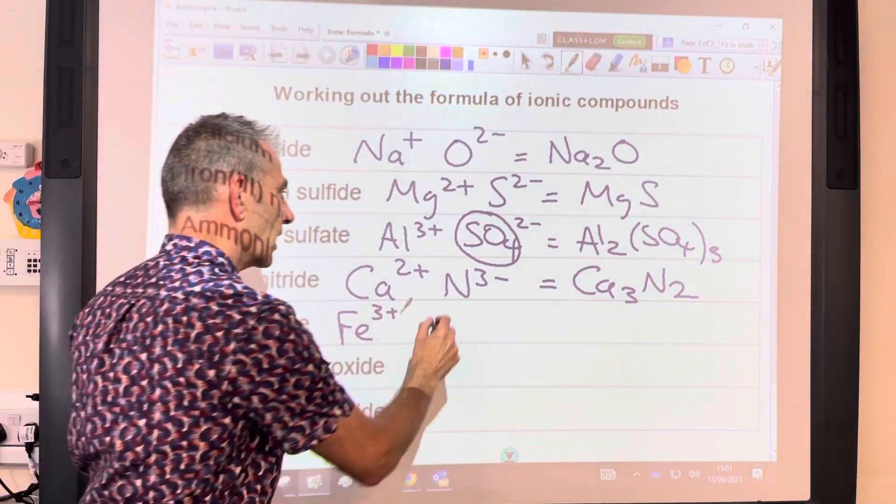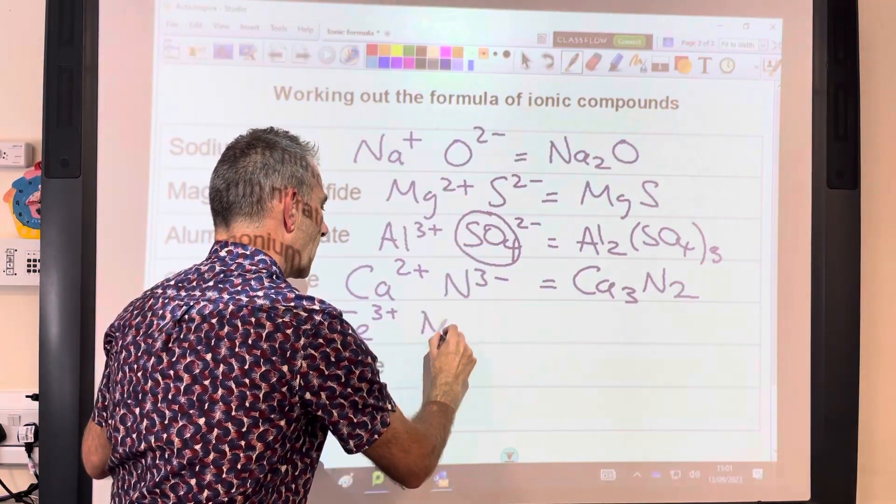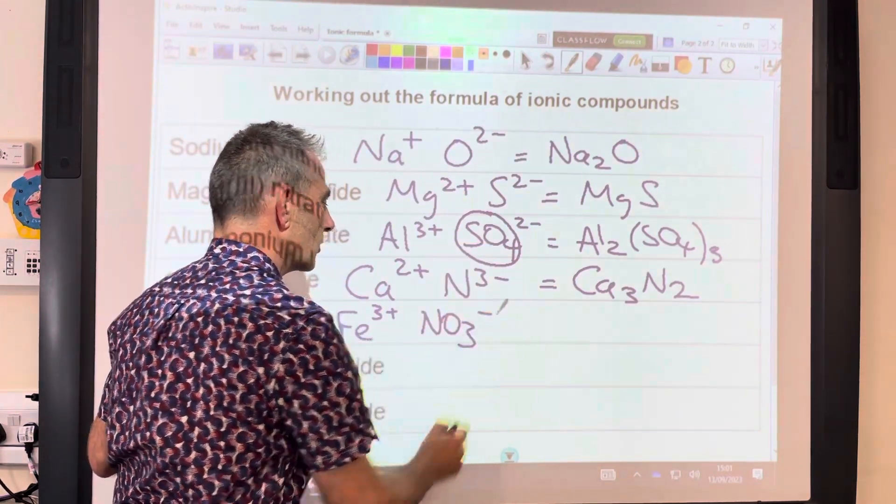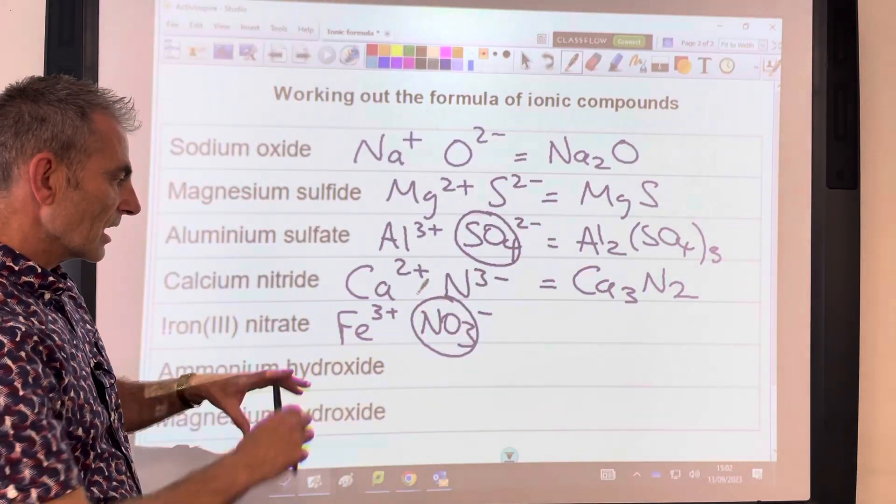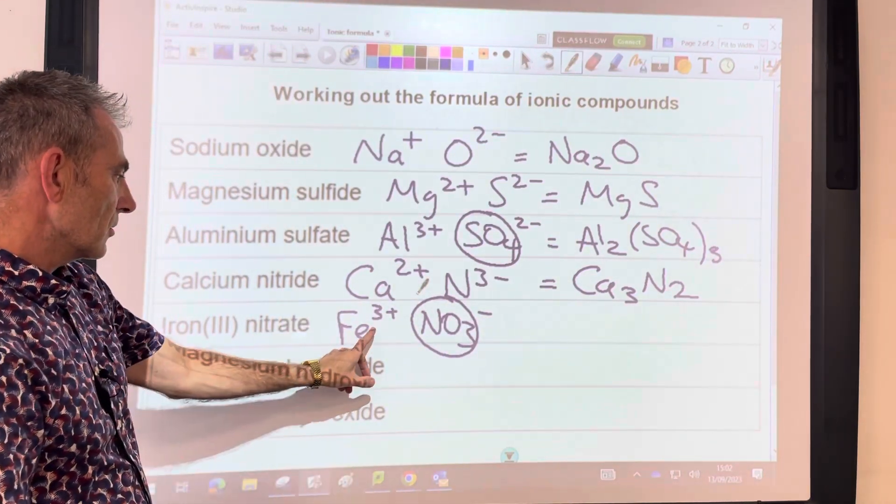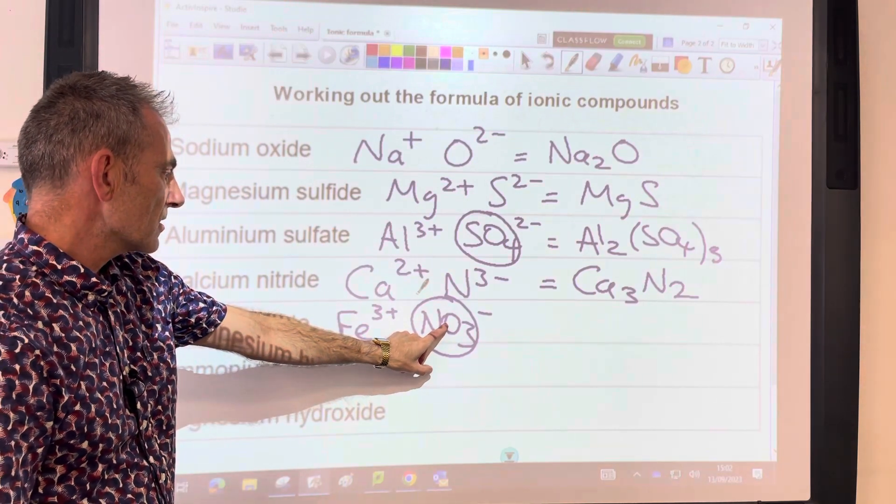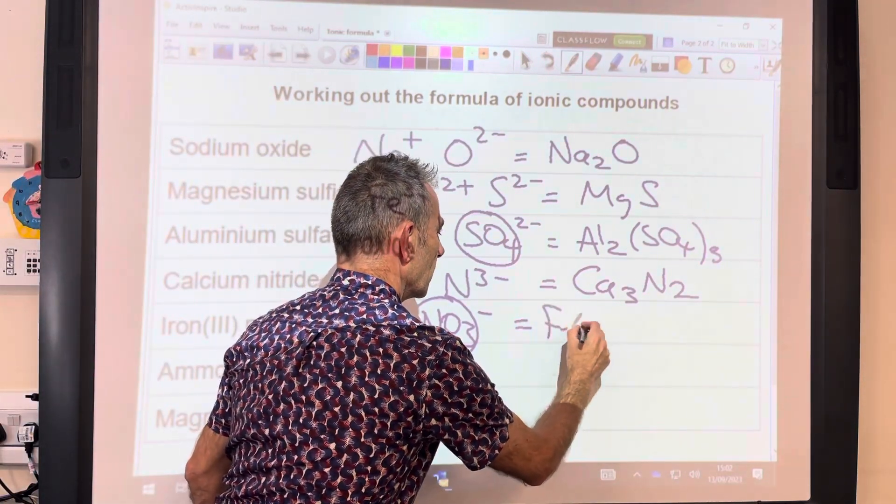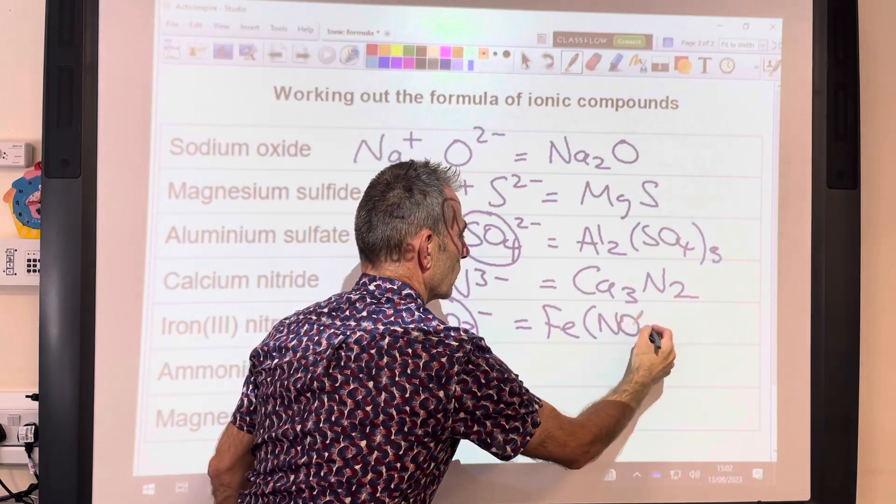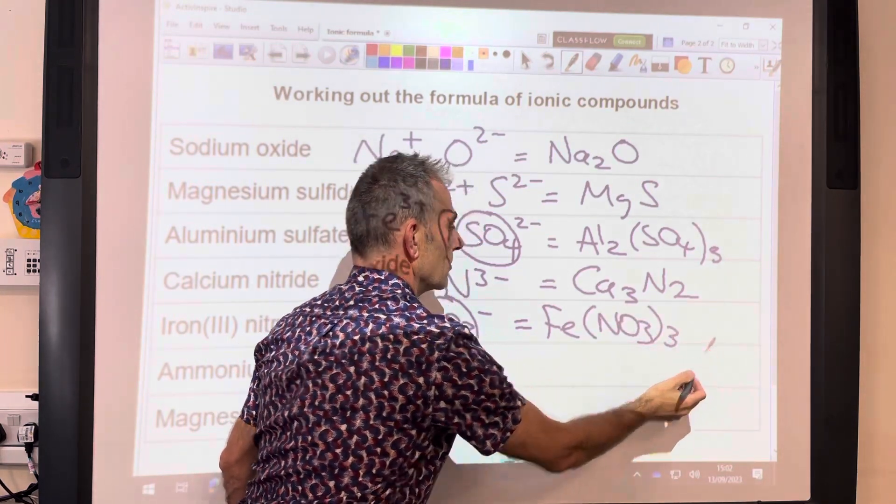The nitrate ion is another polyatomic, NO3 with a 1 minus charge. Again, we're going to think of that as just a single thing. We just need to get that up to 3 minus, so it'll match that. So the formula would be Fe(NO3)3.